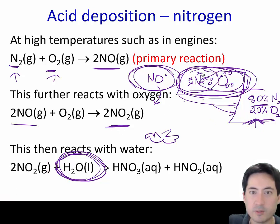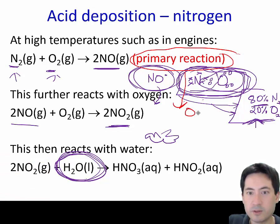That's how I think about these reactions. Number one: get your primary reaction. Number two: react it with oxygen, add an oxygen onto it. Last step: react it with water to turn it into an acid - throw in the extra hydrogens and oxygens to make the common acids.